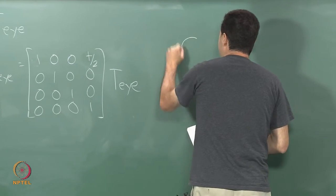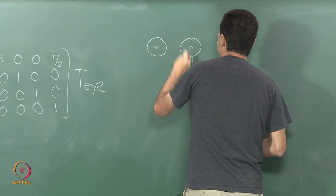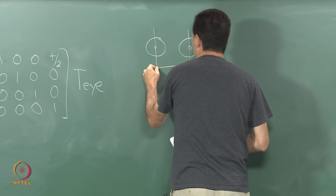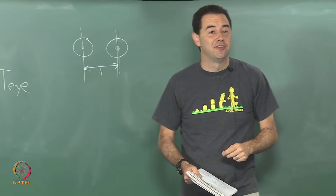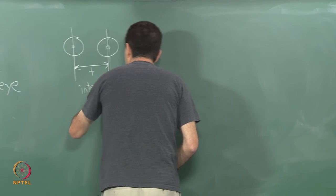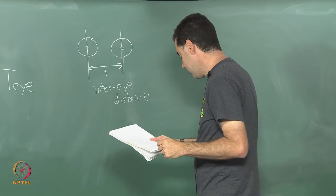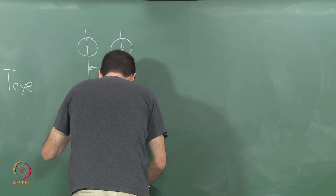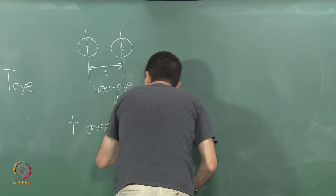where t is going to be the inter-eye distance in the virtual world. So t is the inter-eye distance in the world. And if you are curious about the real world, the average value in the world...